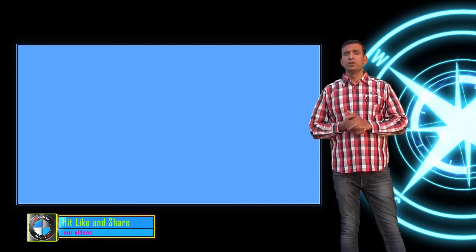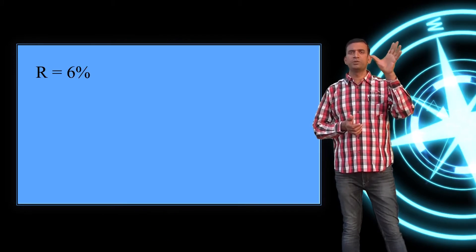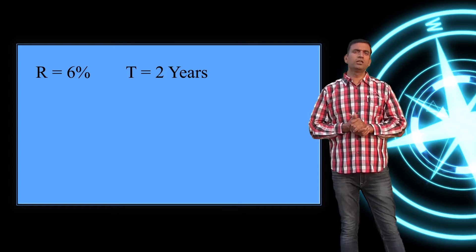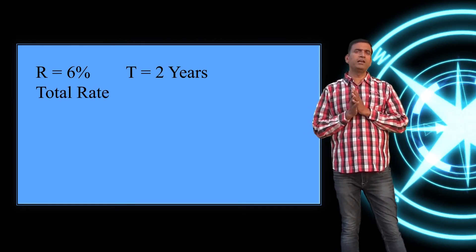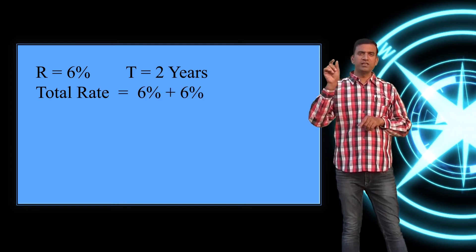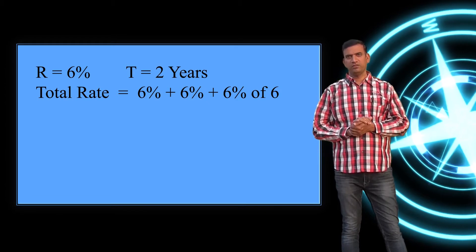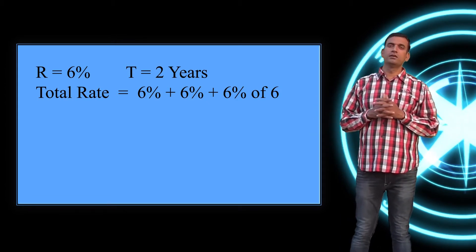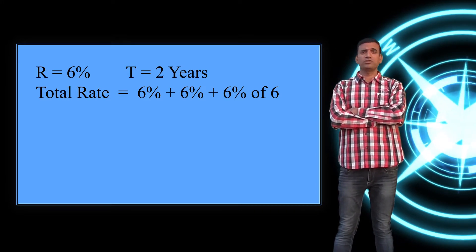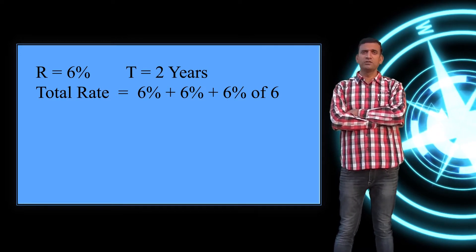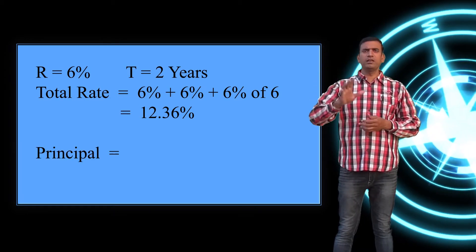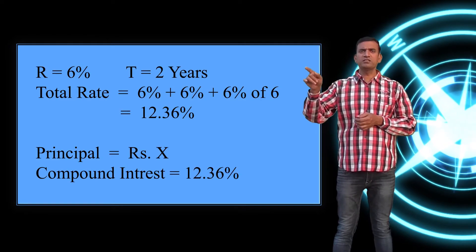Let's take an example: rate = 6%, time = 2 years. To find the total rate: 6 + 6 + (6% of 6) = 12 + 0.36 = 12.36%. So if the principal is x, then compound interest = 12.36% of x.